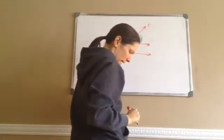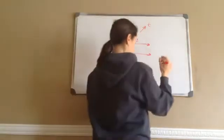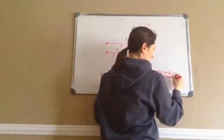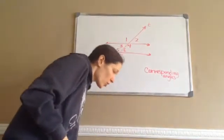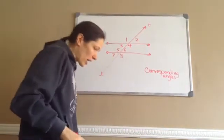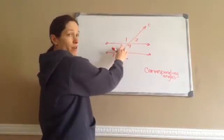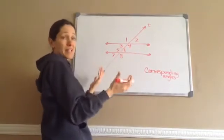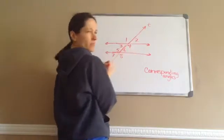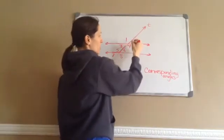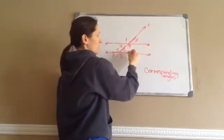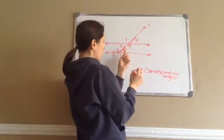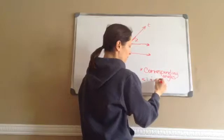Corresponding angles are like 1 and 5, 2 and 4, 3 and 7. Why? Because they make the exact same angle. Look at 1 and then look at 5 — see how they make the exact same angle? Or look at 2 and 6. Those are called corresponding angles. You might want to write that down. For example, angle 1 and angle 5 are corresponding.